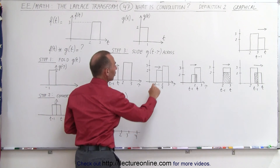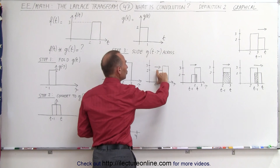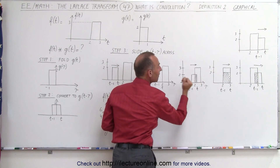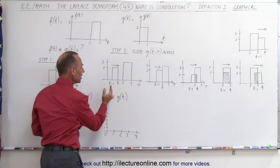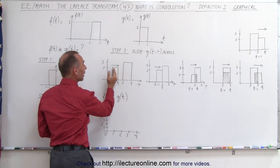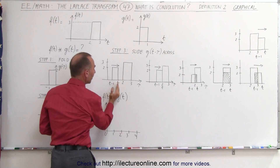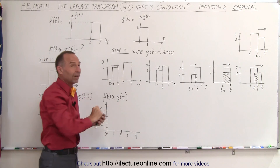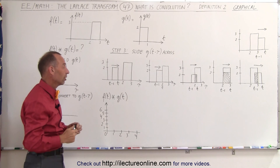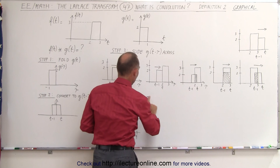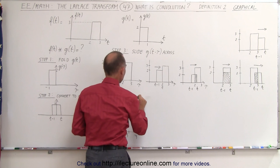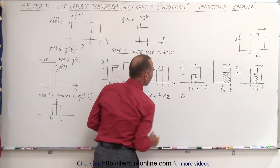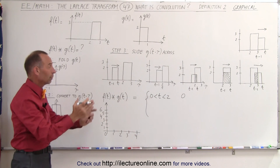In other words, it's going to be the height of the first function times the height of the second function — that's 2 times 3, which is 6 — multiplied times the amount of the overlap, which in this case would be t minus 2. Until t becomes equal to 2, there's no overlap at all. So since you have to multiply 2 times 3 times the overlap, if there's no overlap you get 0. So from the values of 0 less than t less than 2, the convolution is equal to 0.